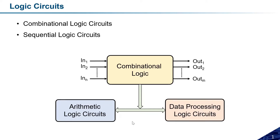So broadly we get three kinds of circuits: arithmetical logic circuits, which are part of combinational logic; data processing logic circuits, also part of combinational logic; and third, sequential logic circuits where we will discuss flip-flops, latches, and related topics. Let us start with the arithmetical logic circuit. Before explaining it, I want to give you a feel for how we can design any circuit when a problem statement is given.